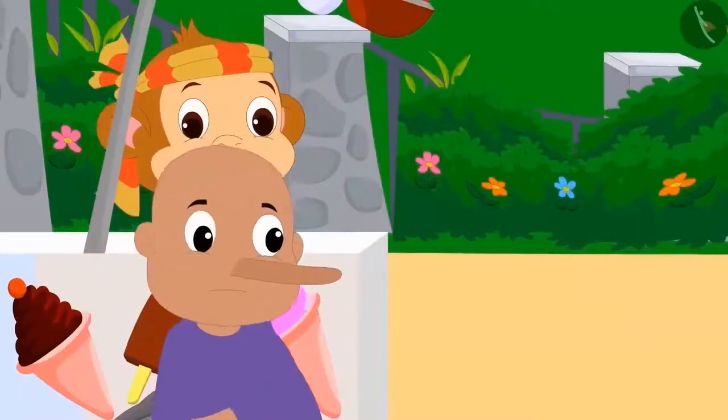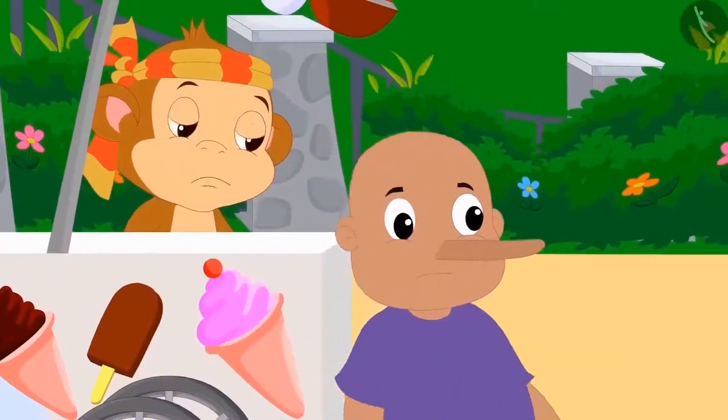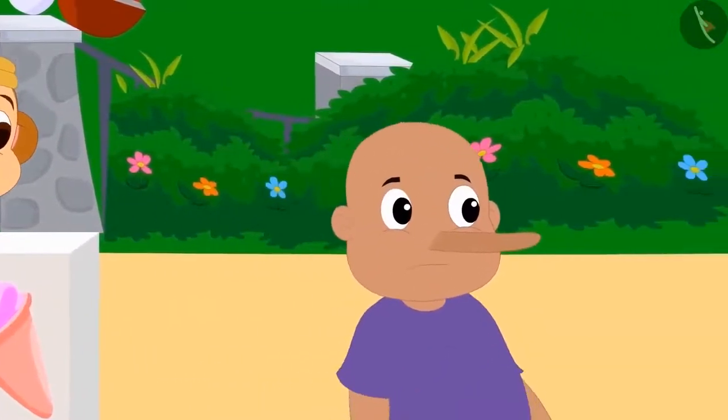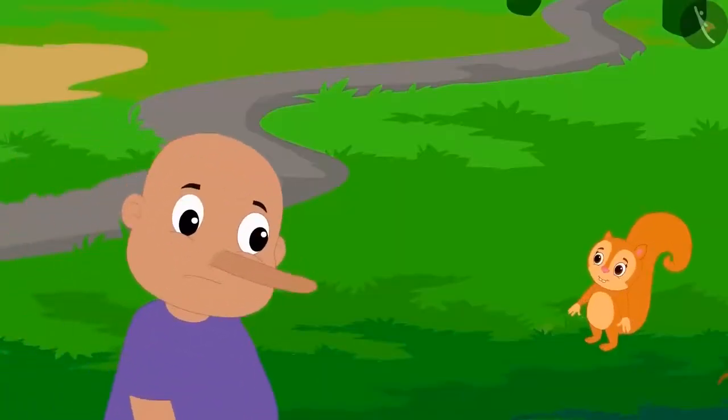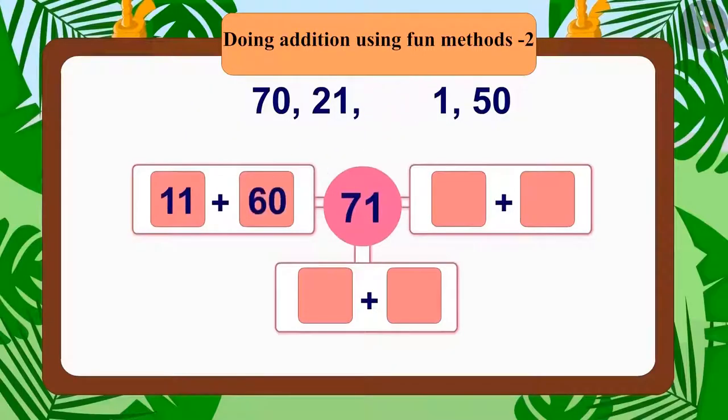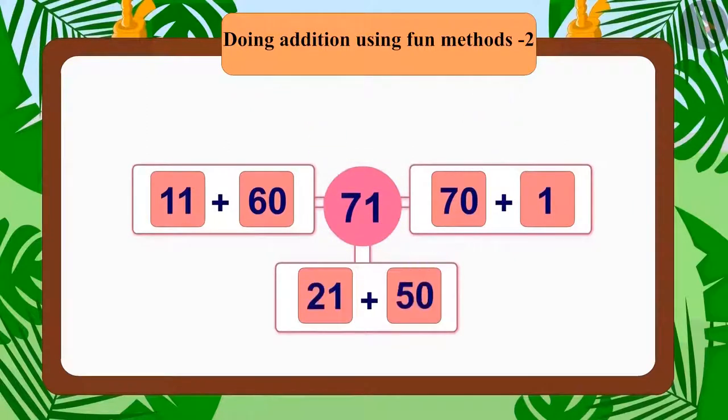But he was unable to find the answer to the angel's riddle. At the end of the day, he asked Chanda for help. Chanda added 60 and 11 to make 71. Then she added 70 and 1 to make 71 in the other way. And finally she added 21 and 50 to make 71 in the third way.